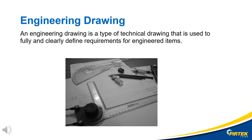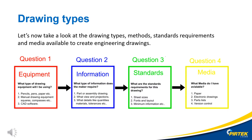An engineering drawing is a type of technical drawing that is used to fully and clearly define requirements for engineered items. Before we start creating an engineering drawing, let's ask ourselves some questions. Question 1: What type of drawing equipment will I be using? Question 2: What type of information does the maker require? Question 3: What are the standard requirements for this drawing? Question 4: What media do I have available? We'll have a look at each one of these questions in some detail.